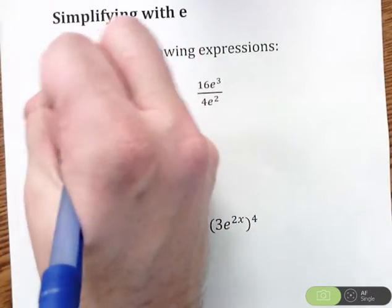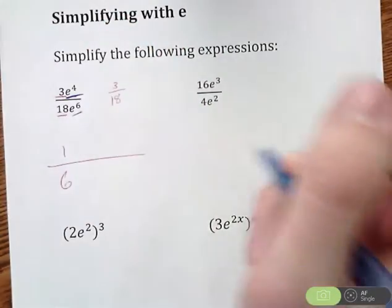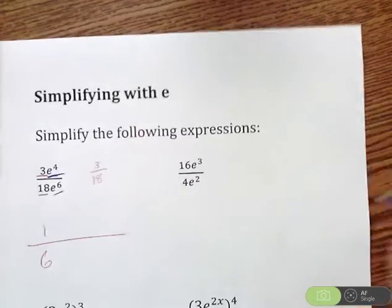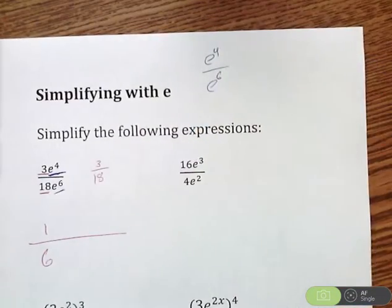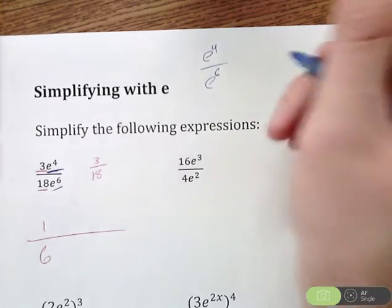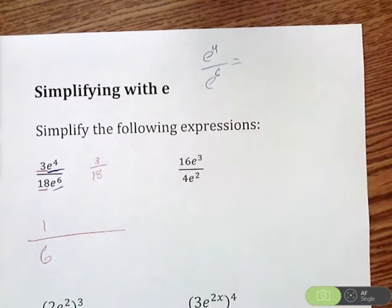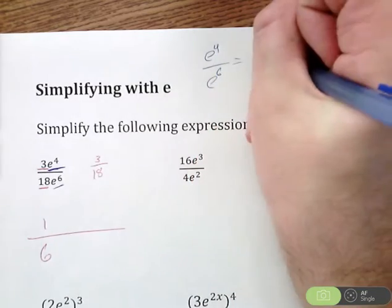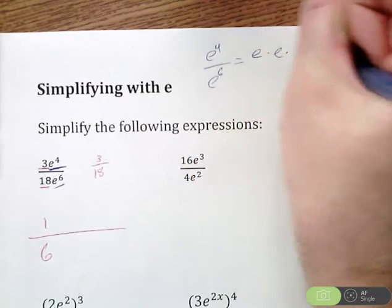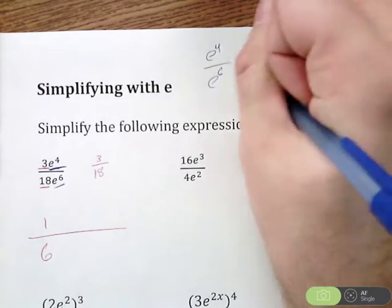After I deal with the numbers, I'm going to focus in on e. So I have e to the 4th divided by e to the 6th. Now, some of us might forget the shortcut come test or quiz time. When you're not sure or when in doubt, write it out. So if you have e to the 4th, that's the same as e times e times e times e.